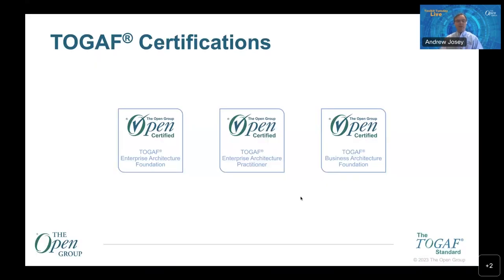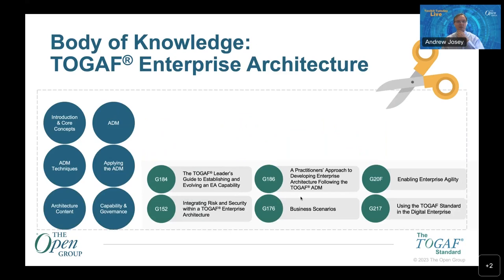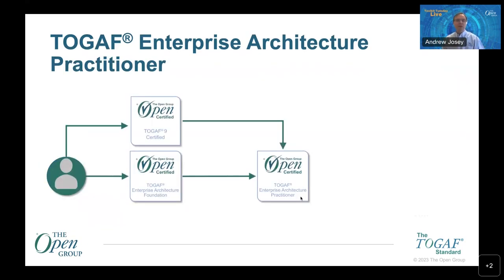Let's look briefly at the certifications and certification credentials. By certification, I mean a multi-day amount of study — about two days for foundation and maybe three days for the next level. The body of knowledge for the TOGAF Enterprise Architect learning path is drawn from about 12 of the 26 documents. There are two ways to approach the EA practitioner: if you're coming from TOGAF 9, you've got the bridging path; or if you're coming new, you can do it stepwise or go straight to practitioner level.